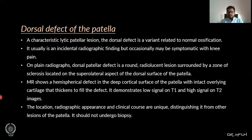Dorsal defect of patella is a characteristic lytic patella lesion that is a normal variant in ossification, usually an incidental radiographic finding but occasionally symptomatic with knee pain. On plain radiograph, the dorsal defect is a round radiolucent lesion surrounded by a zone of sclerosis, located on the superior lateral aspect of the dorsal surface of the patella. MRI shows a hemispherical defect in the deep cortical surface of the patella with intact overlying cartilage that thickens to fill the defect, demonstrating low signal intensity on T1 and high signal intensity on T2-weighted images.